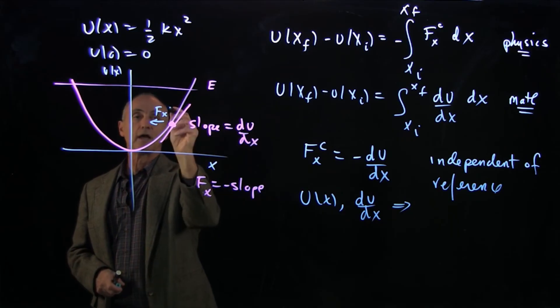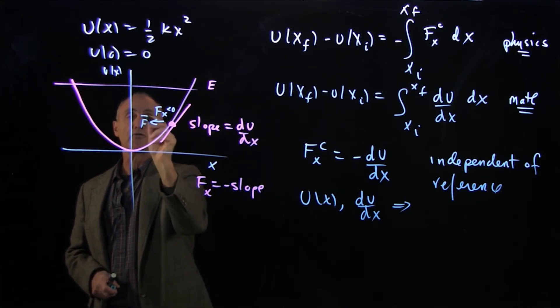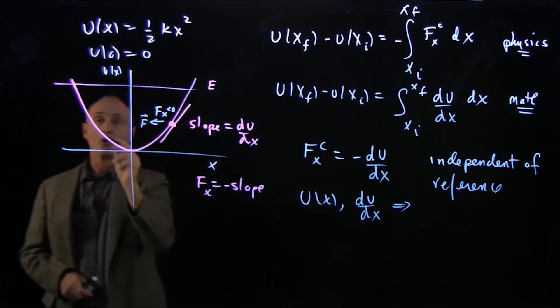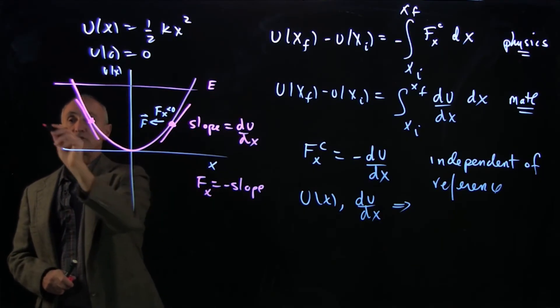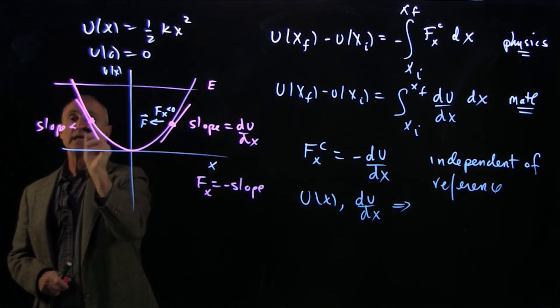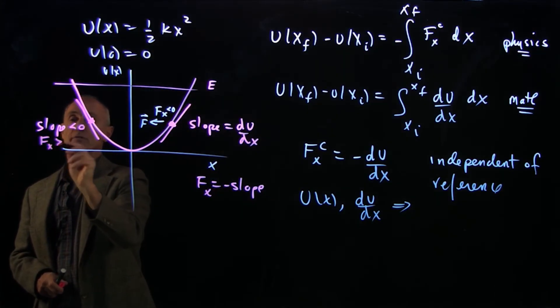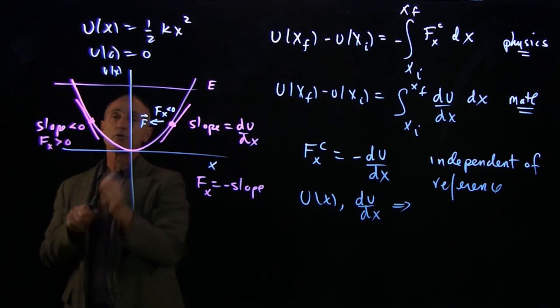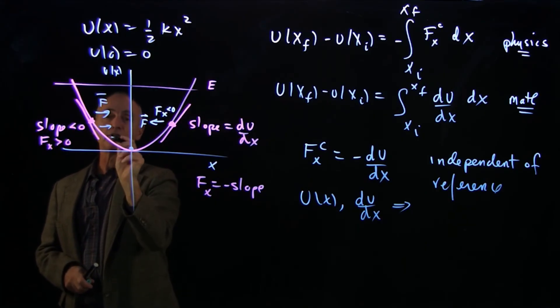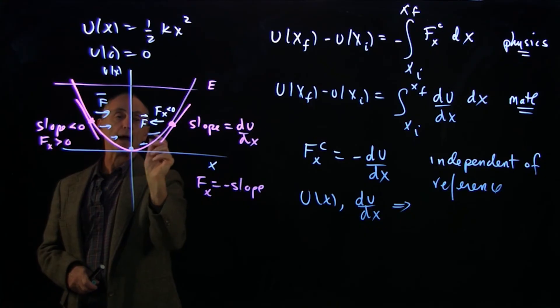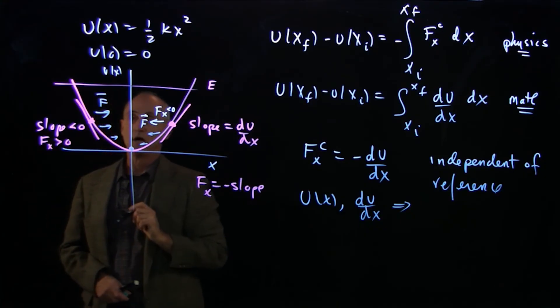So here, you can see that the slope is positive. So the force is negative. So here, Fx is negative. So our actual force is pointing inward. When we're on this side of the potential function, my slope is negative. So the x component of the force is positive. So my force is pointing everywhere on this side, back to the unstretched length.